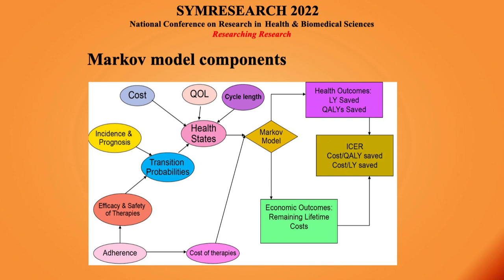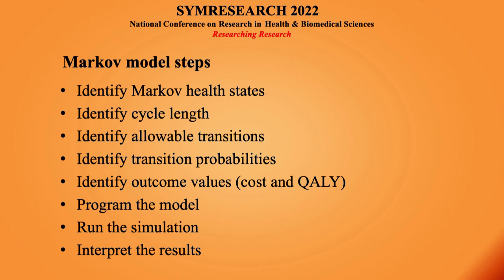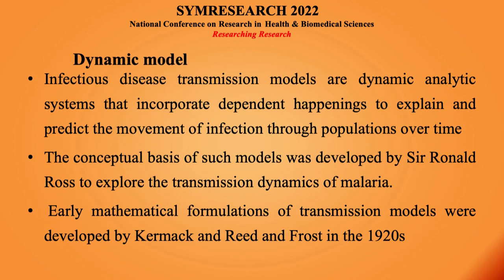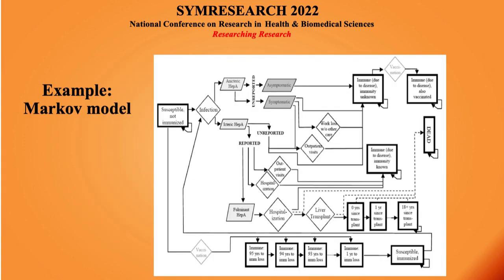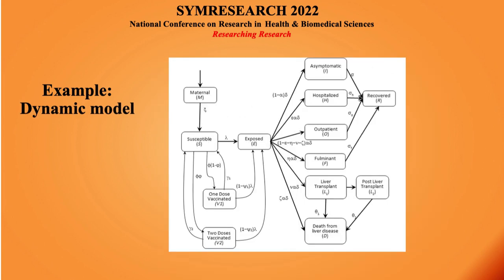These are the different components of the Markov model. Transitional probabilities come from epidemiological data. We also need cost, quality of life, and the appropriate cycle length, and then we can know the health outcomes, costs, and measure the ICERs. These are the different important steps for research modeling. Last comes the dynamic models — these are a little bit more complicated, and very few people use them because a lot of transitional probabilities are required. This is a Markov model, and if you see the dynamic model there are also many health states and probabilities.